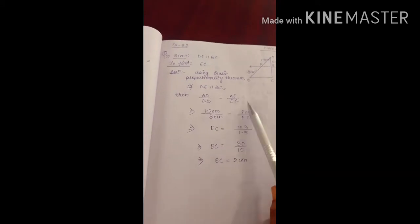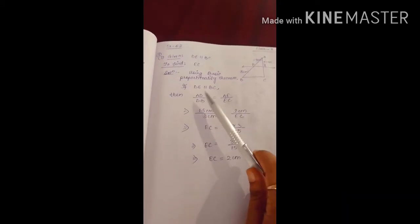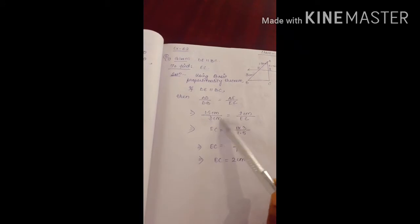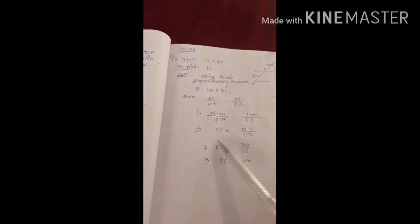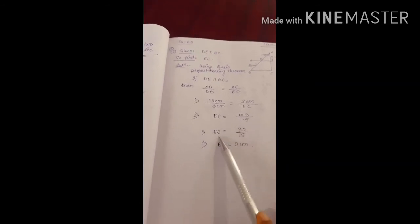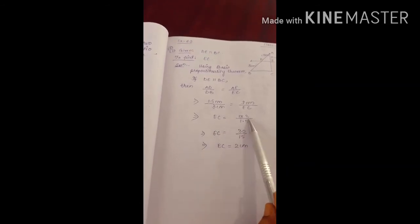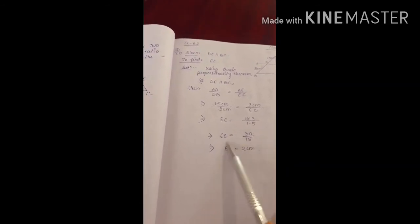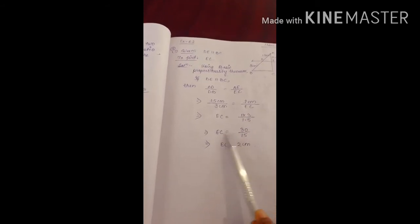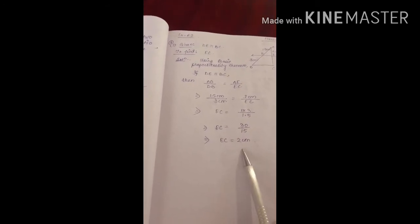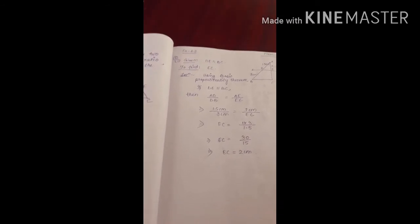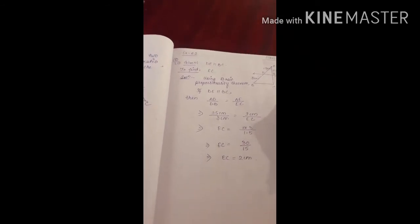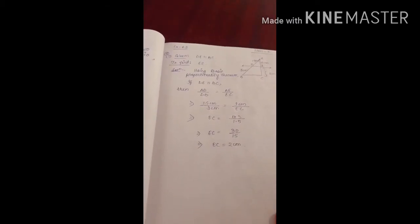After writing that ratio, we put in the values of AD and DB. By doing cross multiplication, we get EC = 30/15, that is 2 centimetres. The length of this part is 2 cm, and the ratios will be equal.